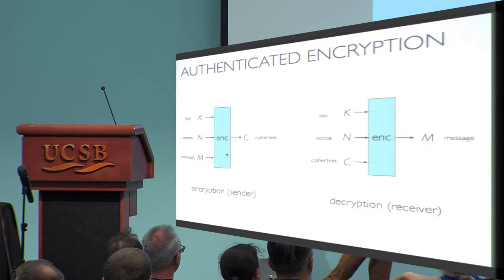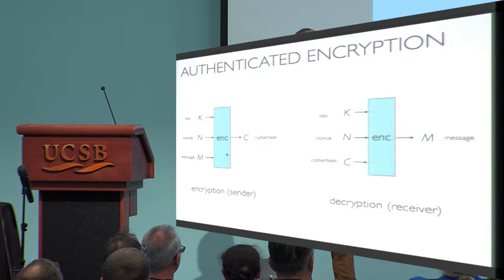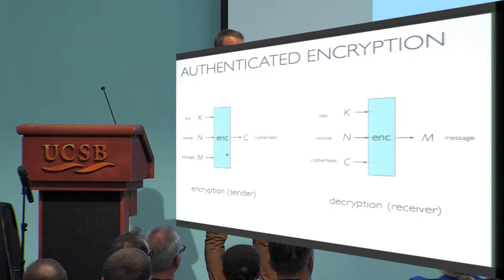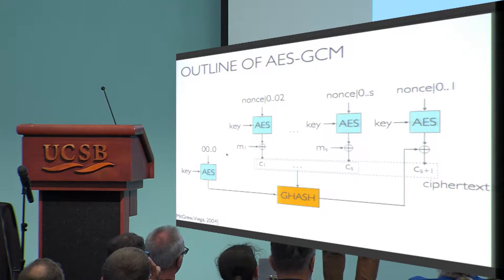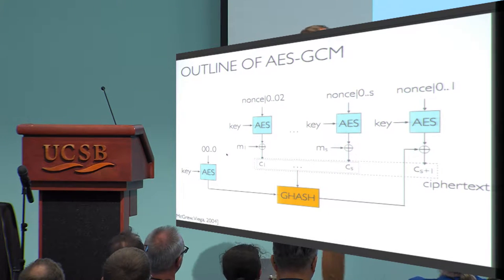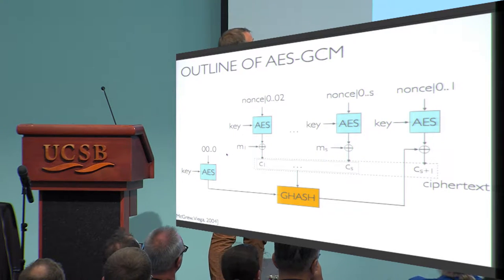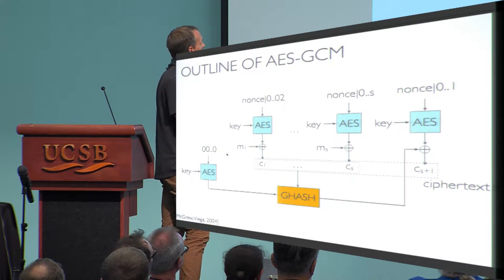We want confidentiality — the ciphertext shouldn't tell you more about the plaintext than maybe its length — and integrity, meaning that without the key you won't be able to produce a ciphertext that will be accepted by the receiver. TLS can use different types of nonce-based authenticated encryption, but the one in pole position for most connections is AES-GCM, which I've tried to draw on this slide.